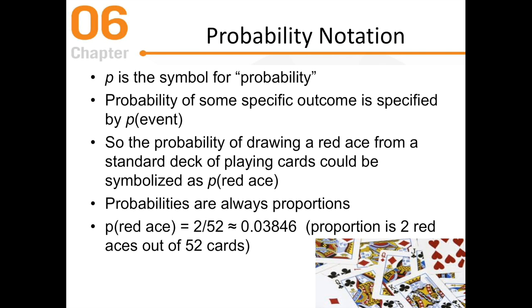P is the symbol for probability. The probability of a specific outcome is written as P, then in parentheses, whatever that event is. For example, probability of drawing a red ace from a standard deck of playing cards would be P(red ace). With 52 cards and only two red aces — hearts and diamonds — you would take 2 divided by 52, which gives 0.038, about a 4% chance of pulling a red ace.